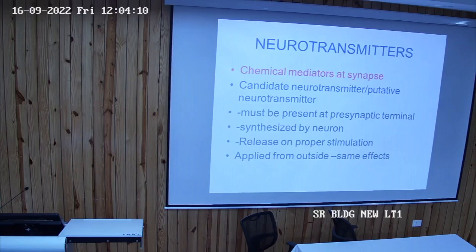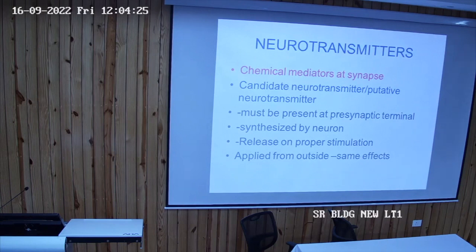We start with neurotransmitters. Neurotransmitters are chemical substances which act as mediators of information at the junction of two neurons, which we call the synapse. Chemical mediators are present at the synapse.